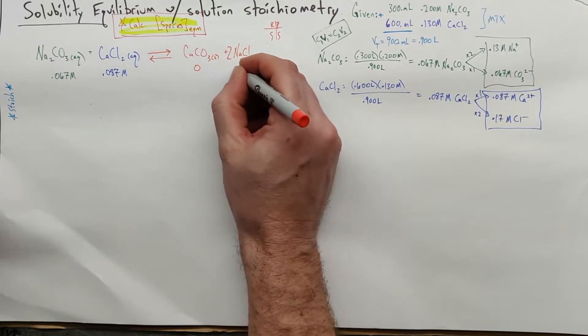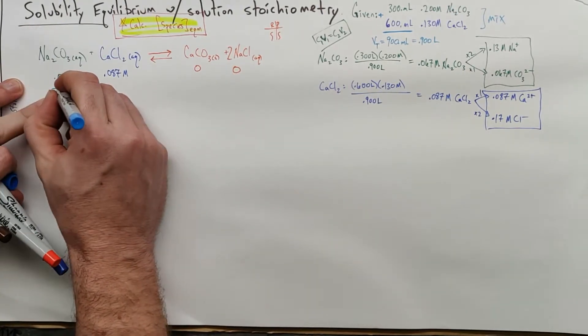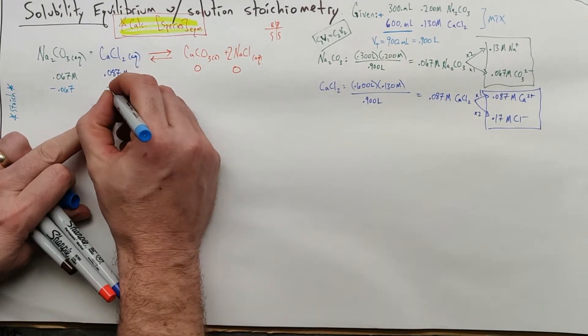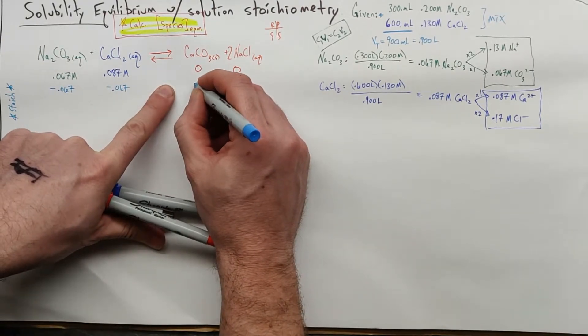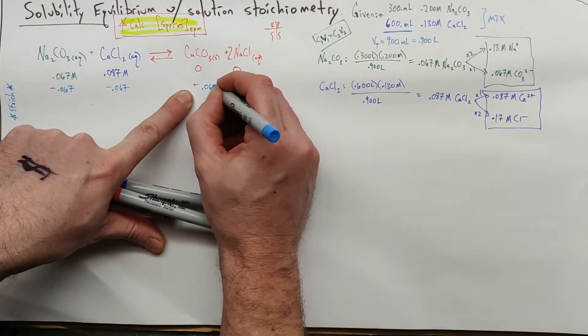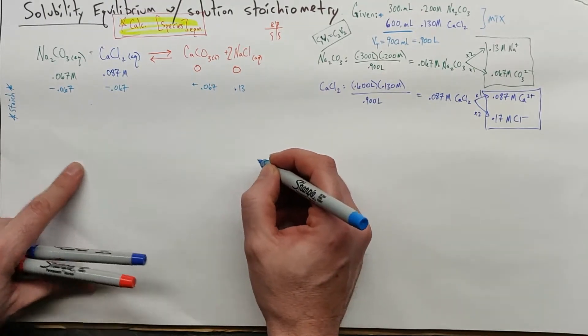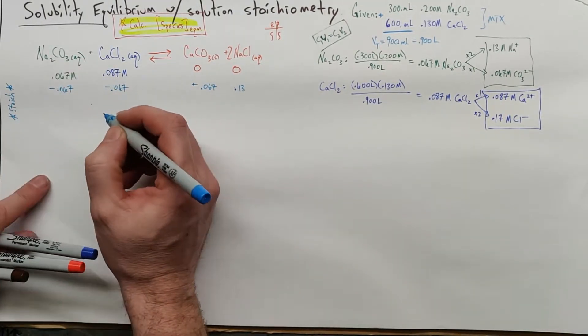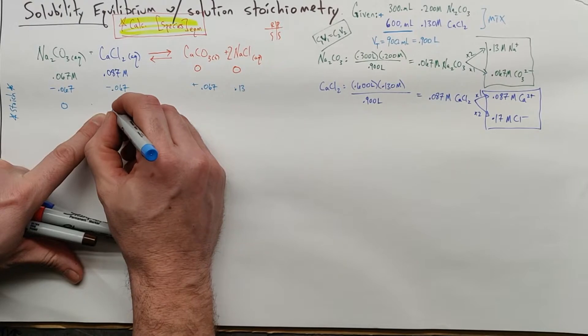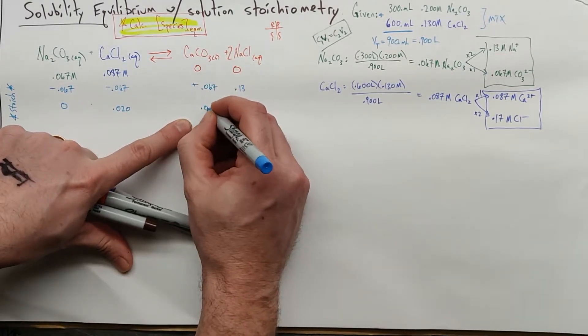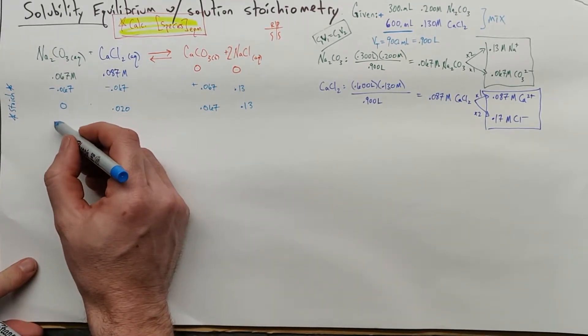We're starting out with none of this and none of this. When we do the math right here, we're going to be losing all of this, it's our limiting reactant. We're going to be losing proportionally 1 to 1 ratio, 0.067 of that. And that means that we're going to be gaining 0.067 of that and gaining 2 times that, which is 0.13 of that. Which gives us our equilibrium amounts, and I should be careful here, which gives us our final amounts. This is stoichiometry, not ICE. I have none of that, and I have 0.020 of that left, 0.067, and 0.13. This then is what happens after stoichiometry.